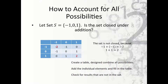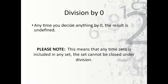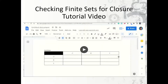Whenever we are checking closure under division, a set is never closed as long as the set includes 0, because dividing anything by 0 gives an undefined result. So anytime 0 is included in the set, the set cannot be closed under division. There's a video here that shows you how to check closure for finite sets.